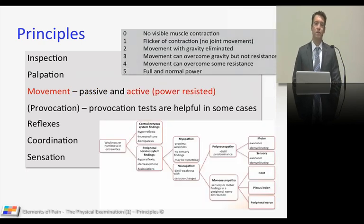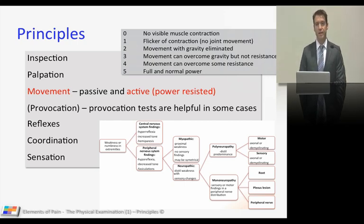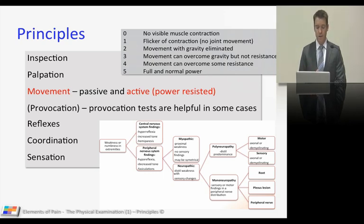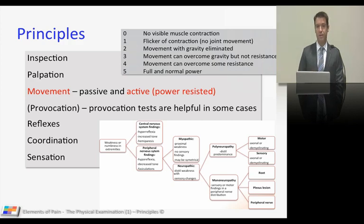Then you're going to move on to your active, power-resisted part of your movement examination. You want to define the power. Most of our patients are going to have good power, but their power will seem weak because of pain. Pain can lead to a type of weakness, but it's not a true neurological weakness — and it's important for you to differentiate the two. There's also a flow diagram of weakness or numbness in extremities; distal weakness with sensory change is truly neuropathic in nature.